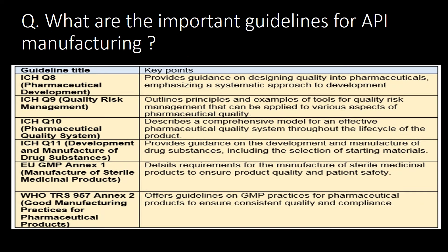Last and very important question: what are the important guidelines for API manufacturing? ICH Q8 (pharmaceutical development), ICH Q9 (quality risk management), ICH Q10 (pharmaceutical quality system), ICH Q11 (development and manufacture of drug substance), EU GMP Annex 1, and WHO TRS 957 Annex 2 are the important guidelines for API manufacturing.